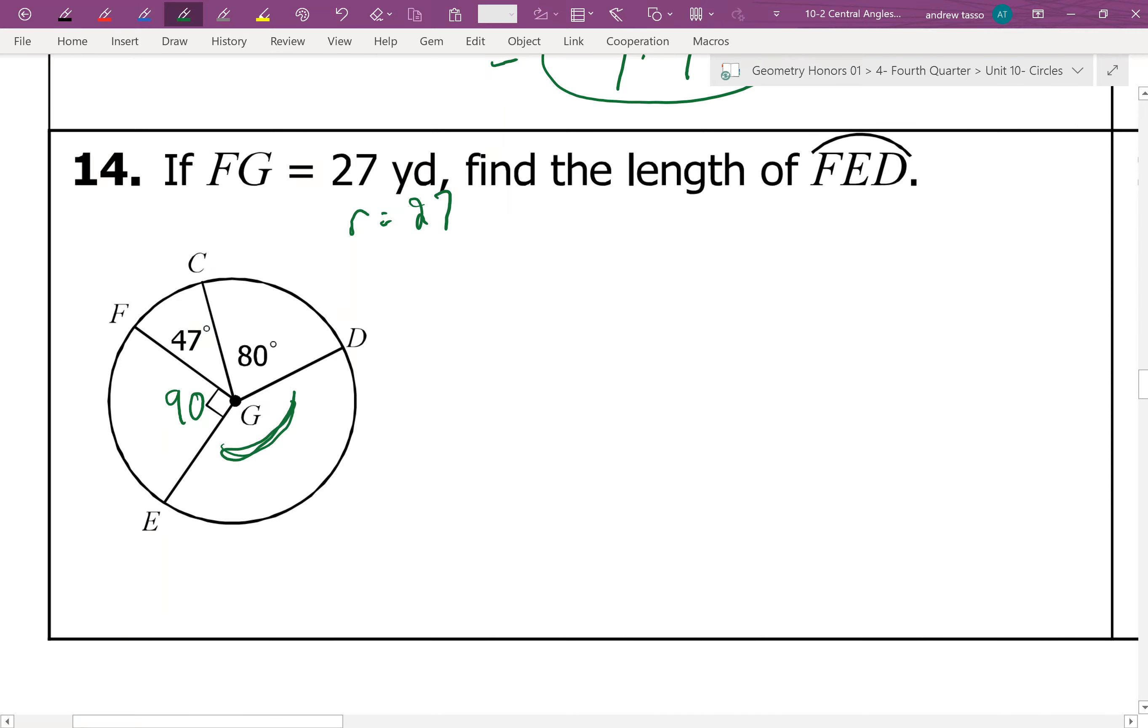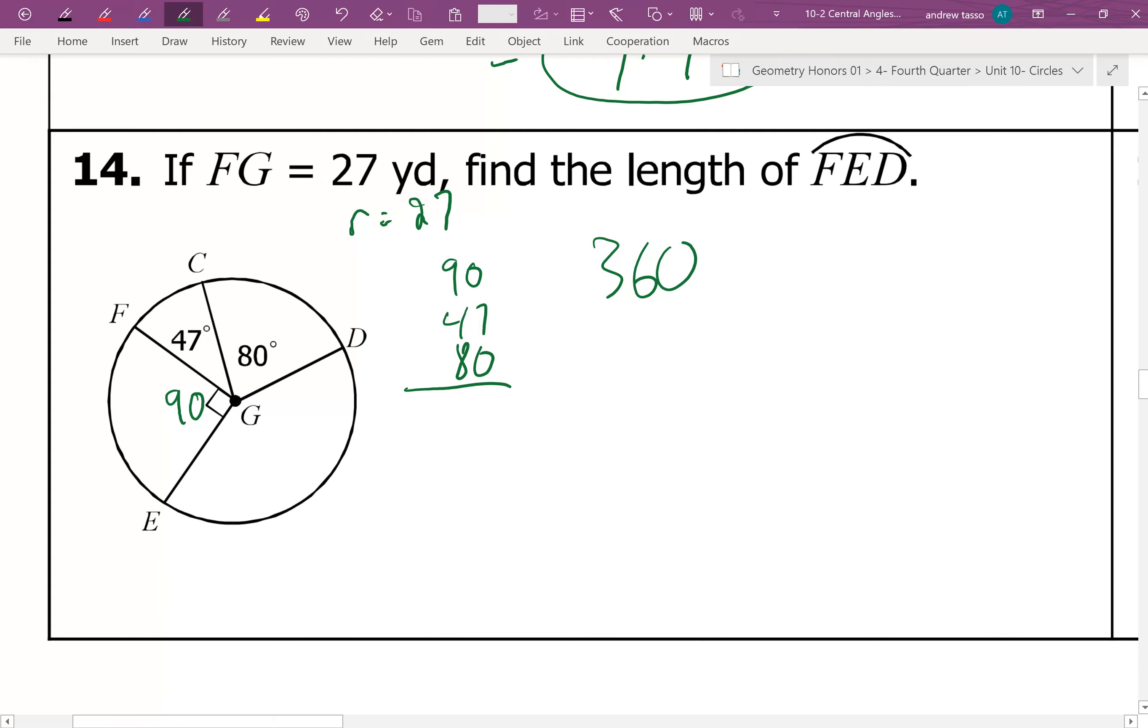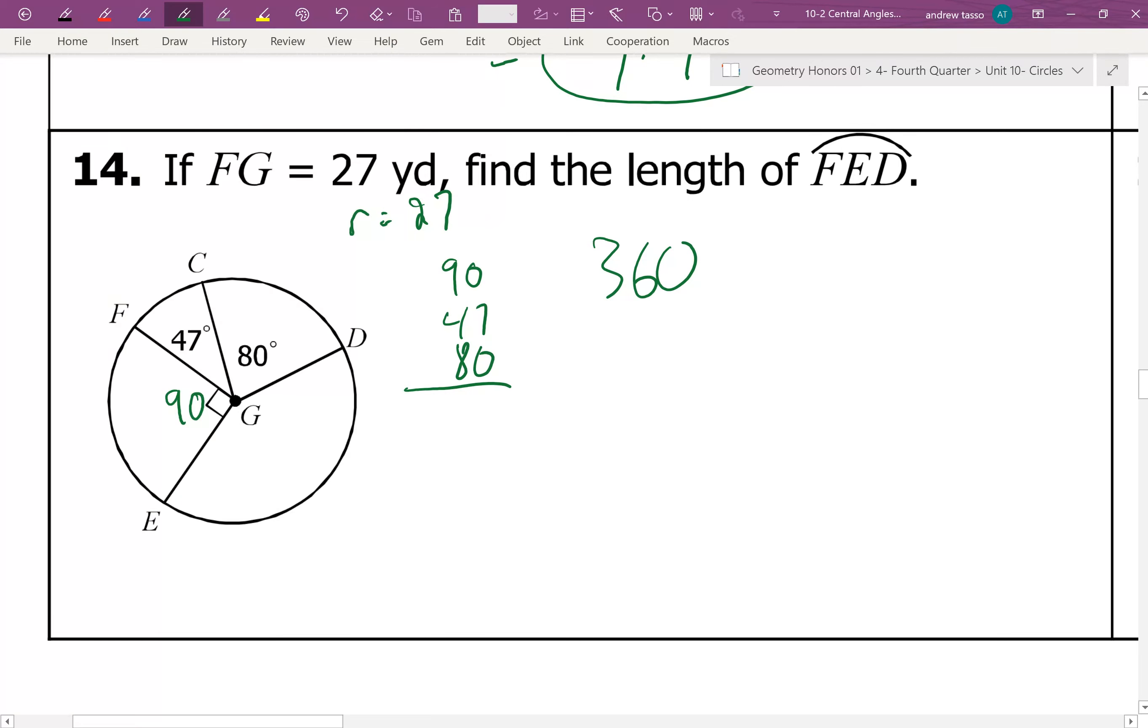So if I add what I have so far, 90, 47, and 80, let's use the calculator for simplicity, 90, 47, and 80, and then we take 360 minus that answer, then we'll have 143 for a result. So this has to be 143.